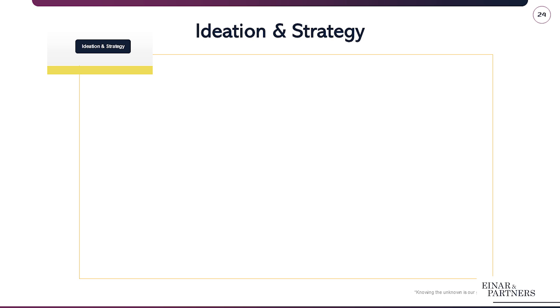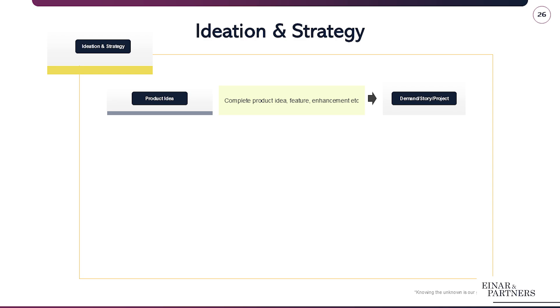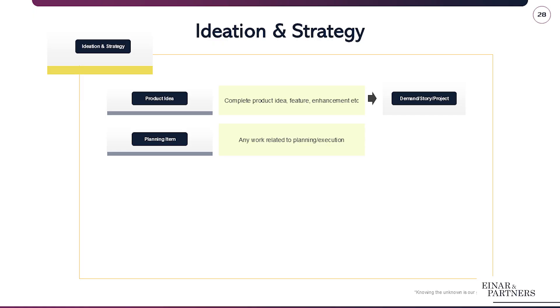Starting with the product idea: this is an item which can represent an entire product, feature, enhancement, or suggested change to a service. An idea is typically then converted into a demand, story, or project. The next concept is the planning item — any type of work related to goals that needs planning or execution. This may differ per organization, but could include working towards an MVP version of something, a test phase, and so on.